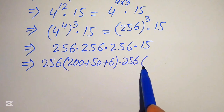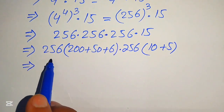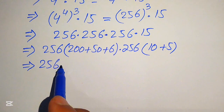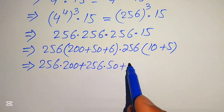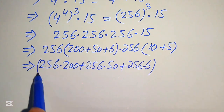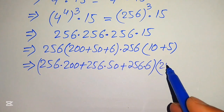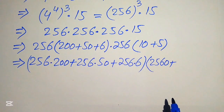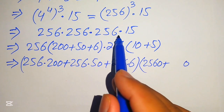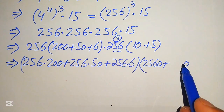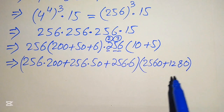We multiply 256 by each value: 256 times 200, plus 256 times 50, plus 256 times 6. On the other side, we multiply 256 by 10 to get 2560, and 256 by 5: 5 times 6 is 30, write 0 carry 3; 5 times 5 is 25, plus 3 is 28, write 8 carry 2; 5 times 2 is 10, plus 2 is 12. So 256 times 5 equals 1280.